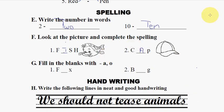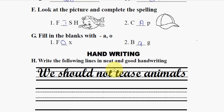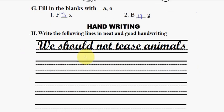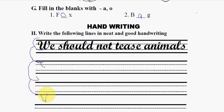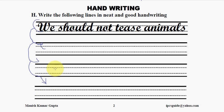The next section is fill in the blanks with A or O. Here the student will write 'fox' and 'big.' The next section is the handwriting section. As per the 4-line copies, we have given lines here so the student can practice handwriting, copying the given words. If the student writes it 4 times, that will be enough practice.